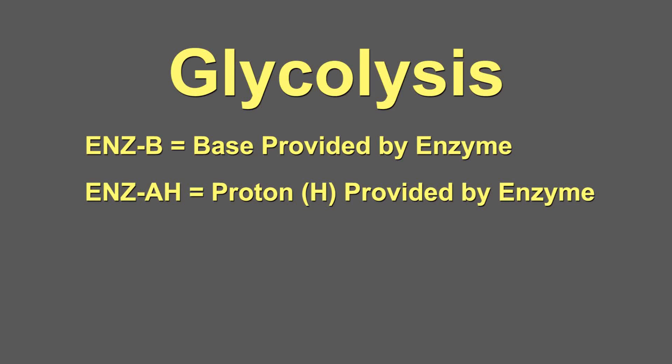Hey guys, here is a quick tutorial of the basic reaction of glycolysis with some arrow pushing. I tried to make this as accurate and simple as possible, but if there are mistakes, let me know. ENZB or ENZAH are a base or an acid that is provided by the current enzyme.